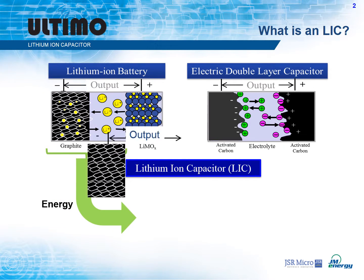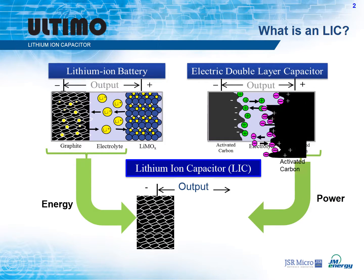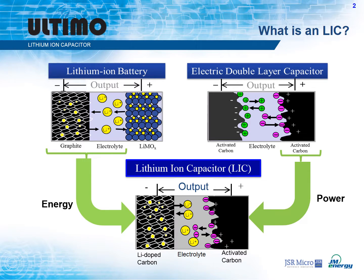The lithium ion battery's negative electrode, or anode, contributes to energy density, while the EDLC's positive electrode, or cathode, contributes to high power capabilities. Lithium ion capacitors utilize electrolytes commonly found in lithium ion batteries. Because the lithium metal oxide cathode generally found in lithium ion batteries is not utilized, the inherent safety is improved and cobalt content is eliminated.